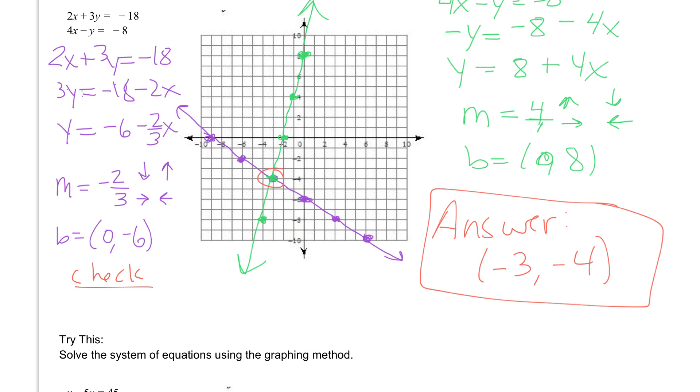What you're checking is you're going to plug in negative 3 for x and negative 4 for y. So looking at the very first equation we would have 2 times the x value which we found to be negative 3, plus 3 times the y value we found was negative 4. And we want to know is that equal to negative 18. So we plug negative 3 in here, we plug negative 4 in here and rewrote it.